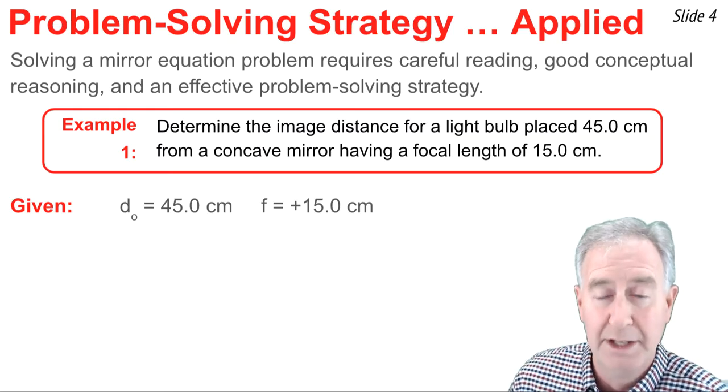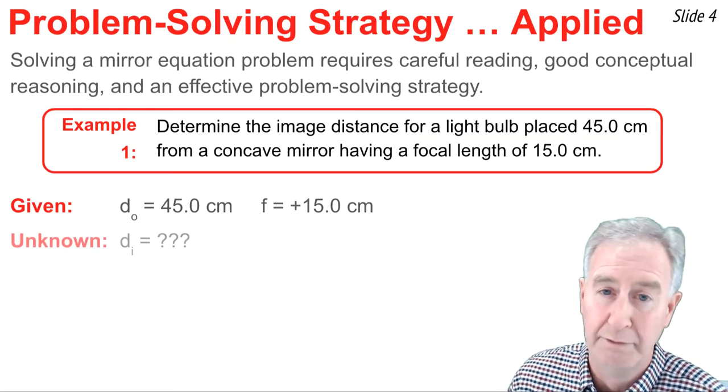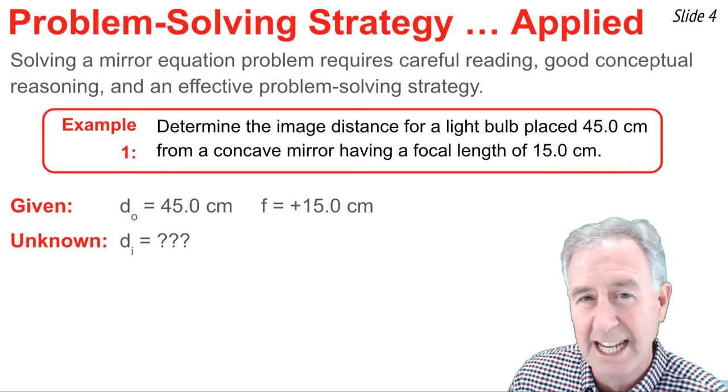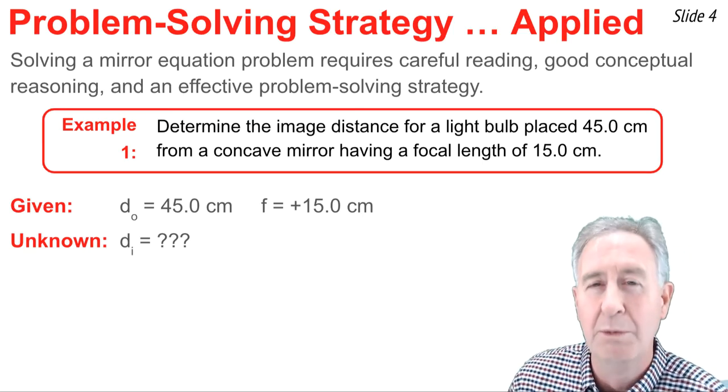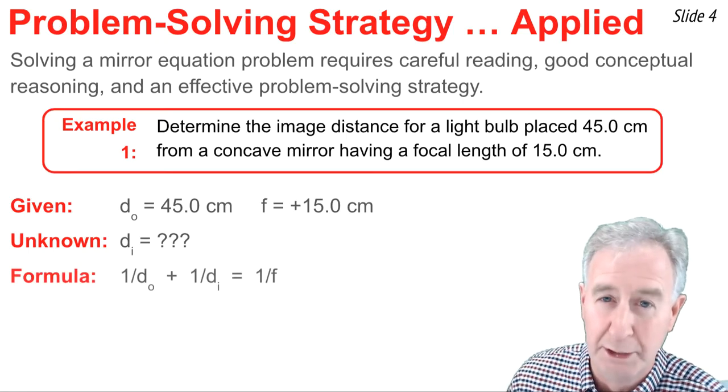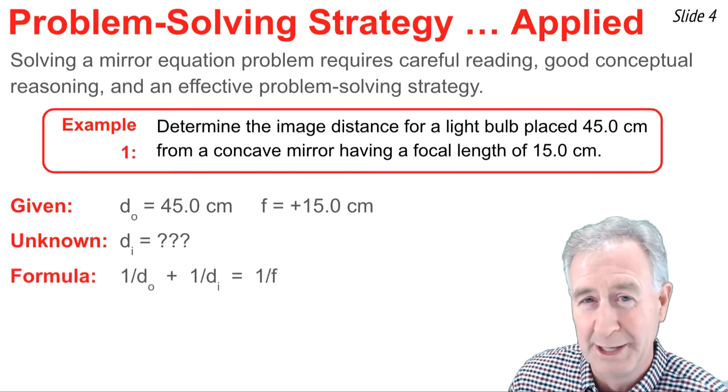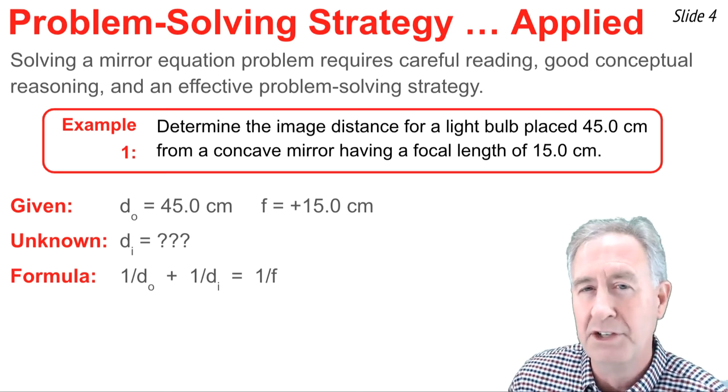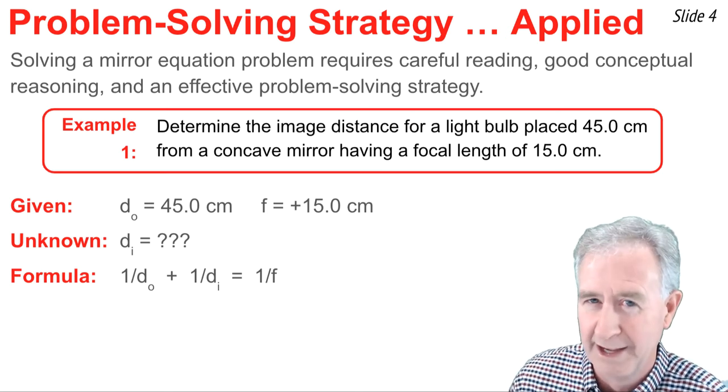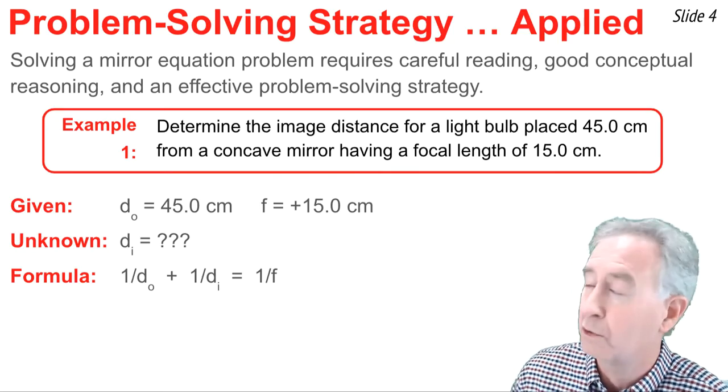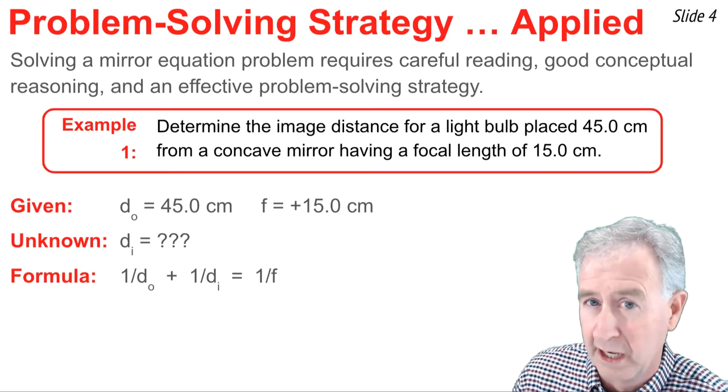Now, the third step is to identify your unknown value, which here it says determine the image distance. So I write d_i, that's image distance, equal question mark. The fourth step is to identify the formula you're going to be using, which is pretty easy right now since we only have one. I write it down. And the fifth and final step is the first time we actually do any math. I'm going to take values of d_o and f and substitute it into this equation to solve for d_i.